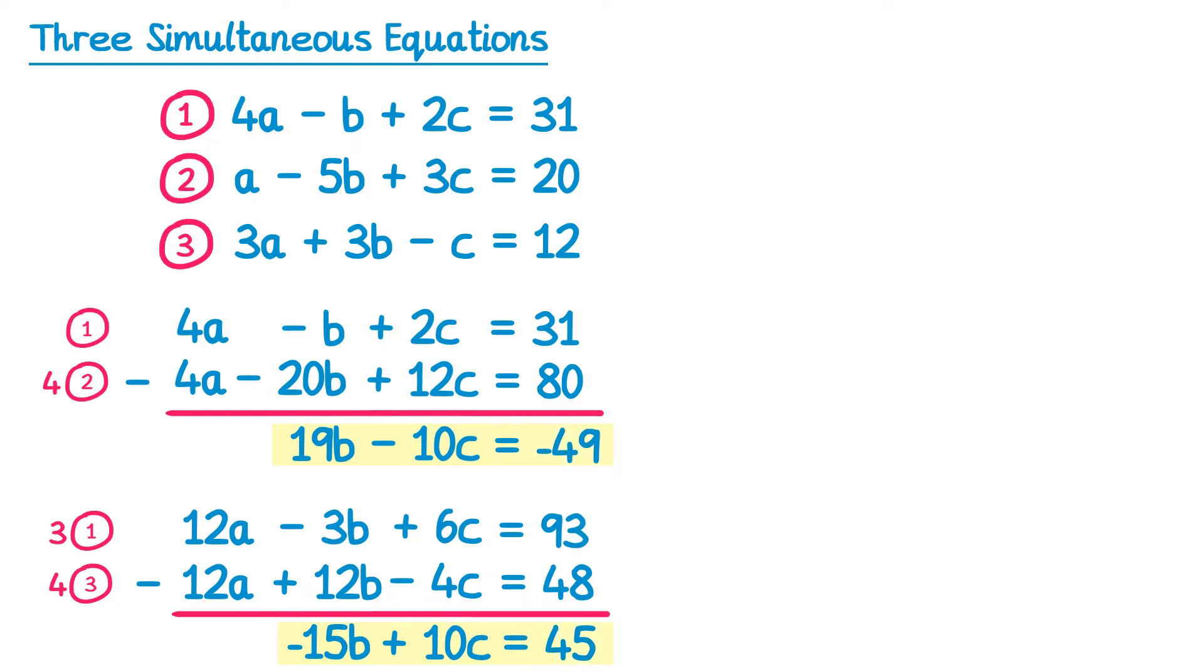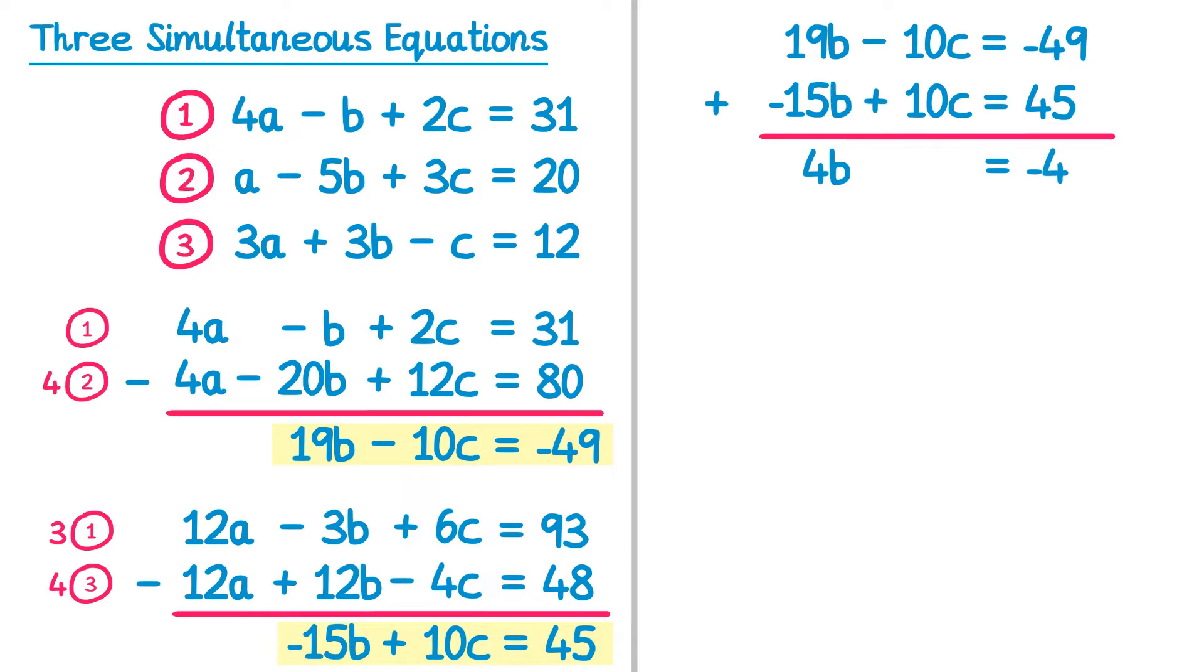You can now solve these equations using your normal approach for simultaneous equations. In this case the coefficients of c already match, so we can just add the equations together here. So 19b add negative 15b is 4b, negative 10c add 10c is 0, and negative 49 add 45 is negative 4. If you divide by 4 on both sides you'll find that b is negative 1. So we've found our first variable, b equals negative 1.